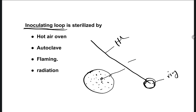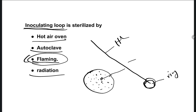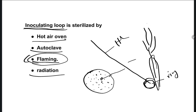So the inoculating loop is sterilized by which method? Options are: hot air oven, autoclave, flaming, radiation. The right one is option C, flaming. Flaming means placing it on fire to sterilize the inoculating loop.